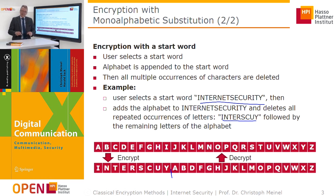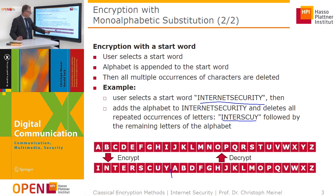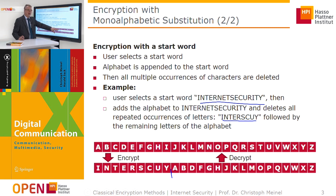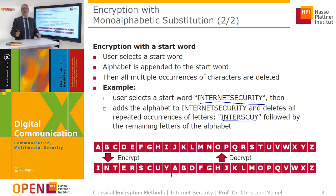If the recipient wants to decrypt, they have to go in the reverse direction. So for example, L in a ciphertext needs to be replaced by R. If one does this consistently with all letters in the message, the recipient gets back the plain text.